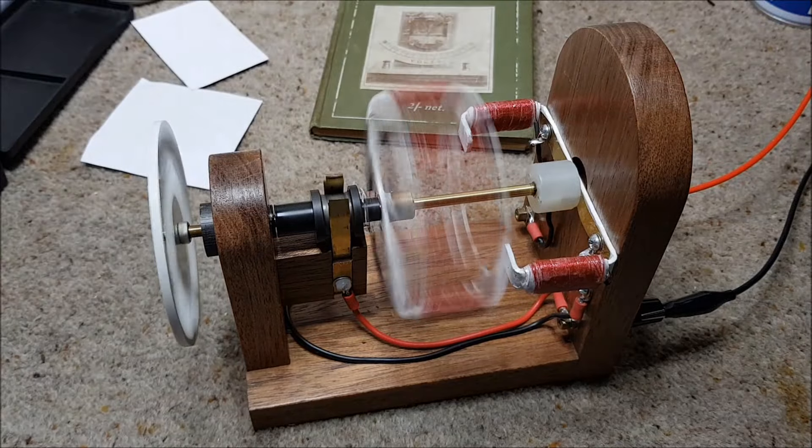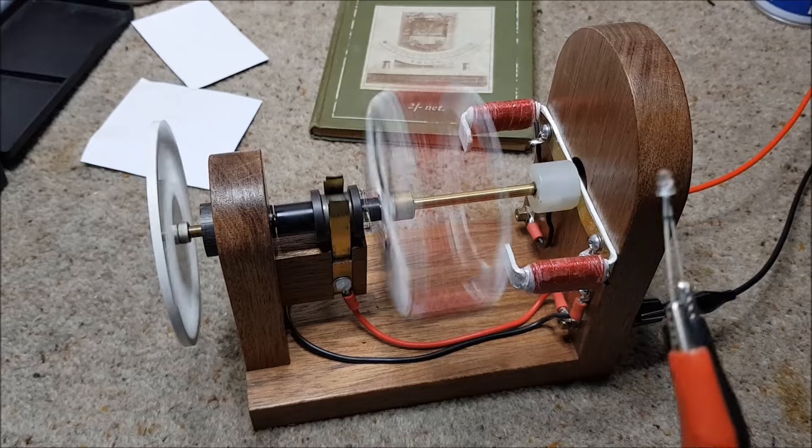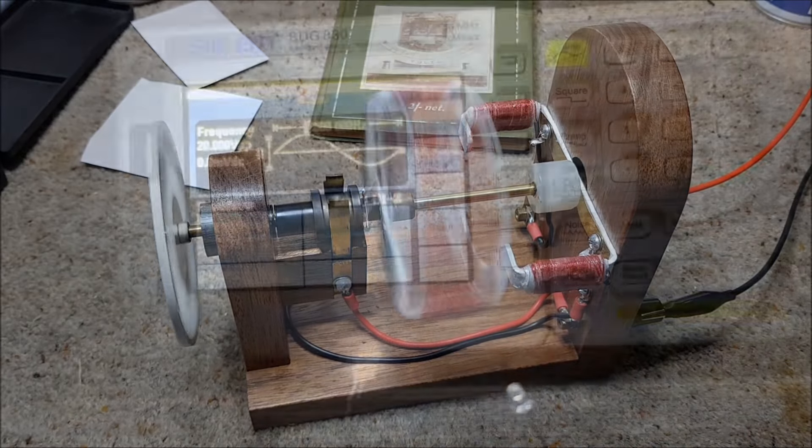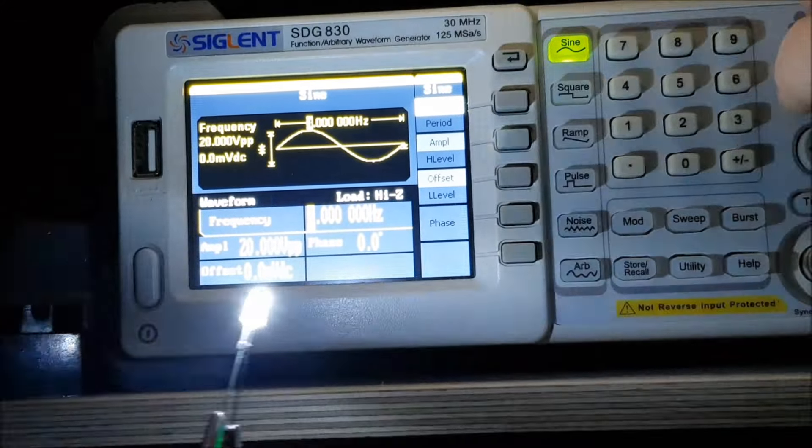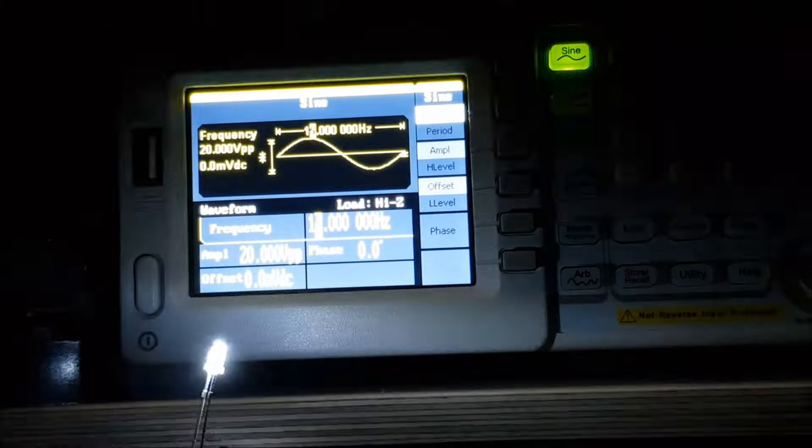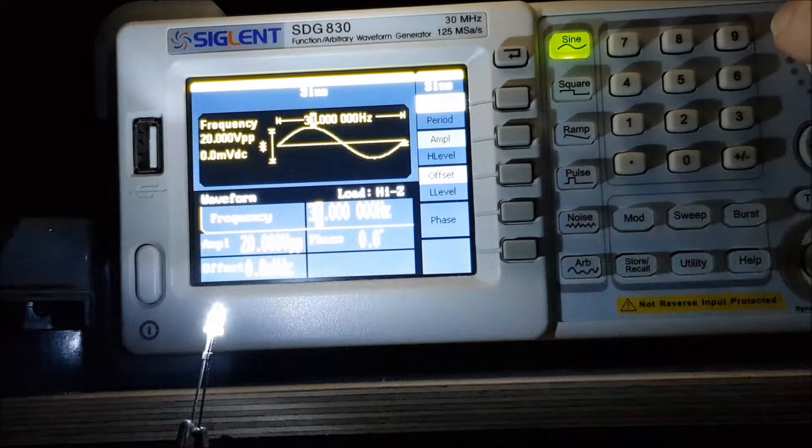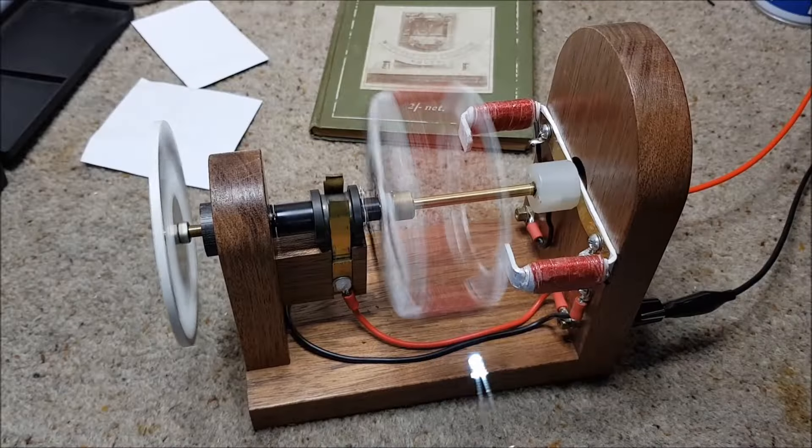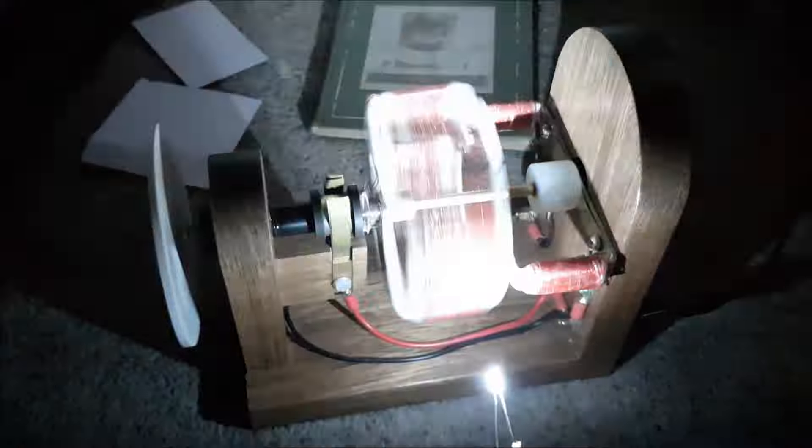In order to do that, I thought a strobe light would be useful. I've got an LED connected to my signal generator. Here's my signal generator. You can probably see the LED flashing away there. As I increase the frequency, obviously the rate goes up. If I switch this back to the motor and dip the lights, I can point this at it and just adjust my signal generator until we find a point at which the rotor stops.